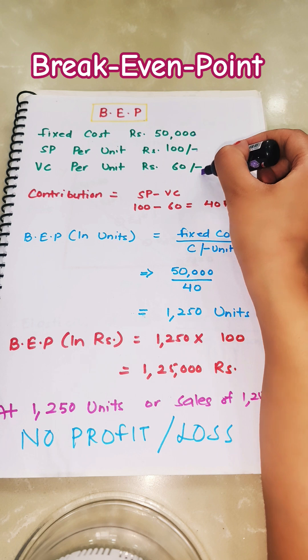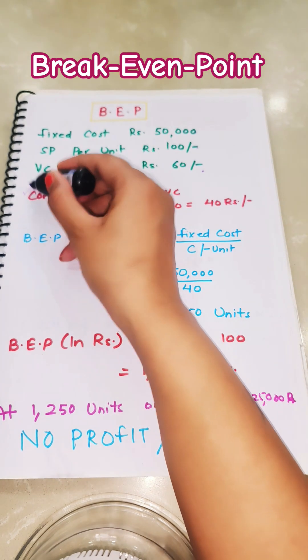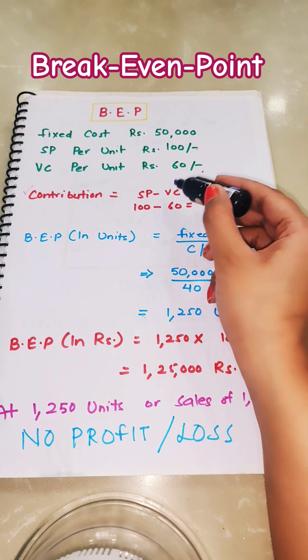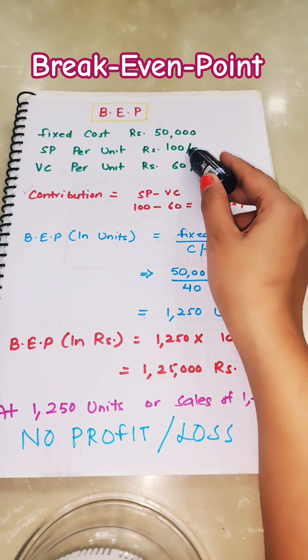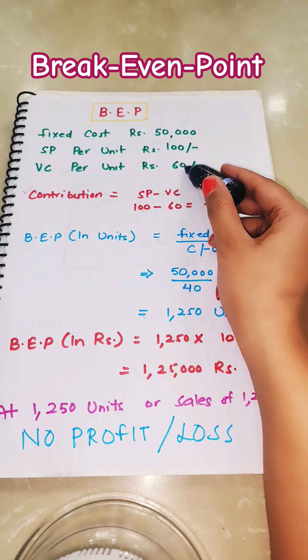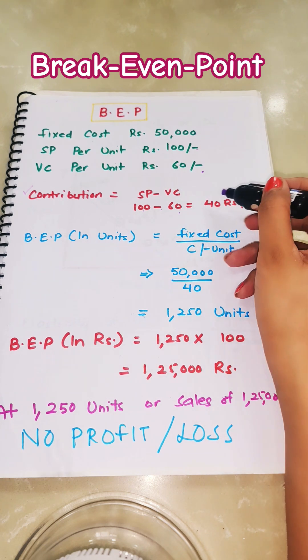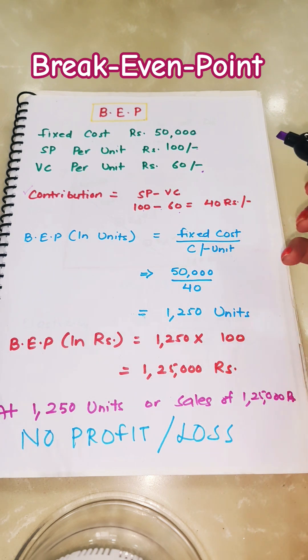To calculate break-even point, first we need to calculate contribution. The formula is selling price minus variable cost. Selling price is Rs. 100 minus variable cost Rs. 60, so contribution comes out to be Rs. 40.